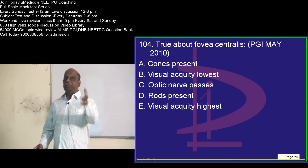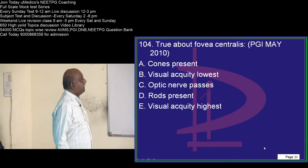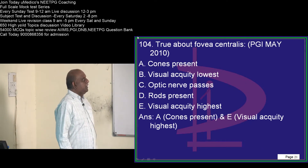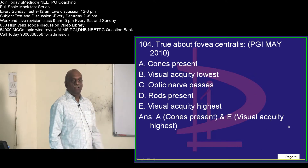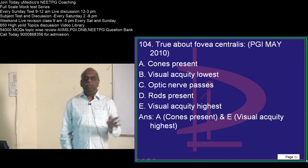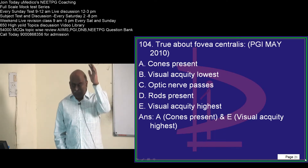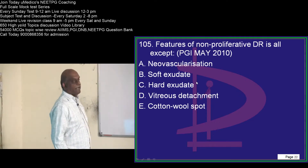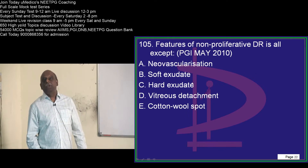Now comes the fovea centralis. What is the speciality of fovea centralis? You have cones in it and there are no rods in it — that is very important. The area of the retina with the highest amount of visual acuity is the fovea centralis. This is what you have to basically remember, and this was one of the earlier questions of PGI Chandigarh.